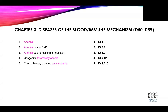That brings us to the end of our Chapter 3, Diseases of the Blood and Immune Mechanism, categories D50 through D89. In our next video, we are going to go through the endocrine system, which will be very exciting — lots to unpack there. Thank you.